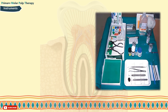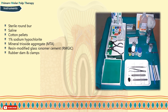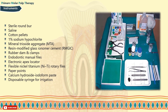Materials and instruments needed during pulp treatment: sterile round burs, saline, cotton pellets, 1% sodium hypochlorite for irrigation, mineral trioxide aggregate or MTA, resin-modified glass ionomer cement, rubber dam and clamps for isolation, endodontic manual files, electronic apex locator, flexible nickel-titanium rotary files, paper points, calcium hydroxide iodoform paste, and disposable syringe for irrigation.